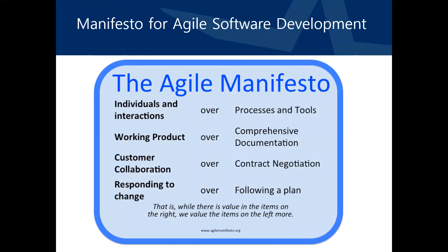The Agile Manifesto for software development captures the essence of the change in attitude for agile development. Specifically, it emphasizes individuals and interactions over processes and tools, working product over comprehensive documentation, customer collaboration over contract negotiation, and responding to change over following a plan. That is, while there is value in the items on the right, we value the items on the left more.